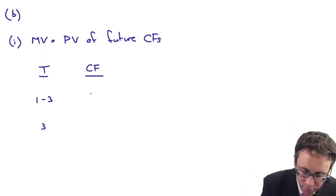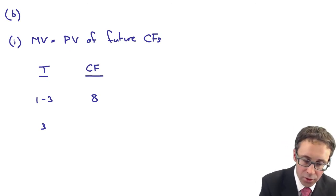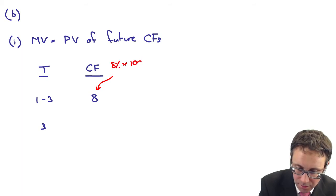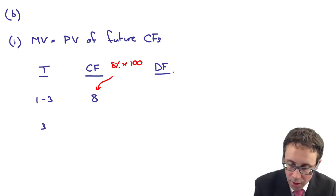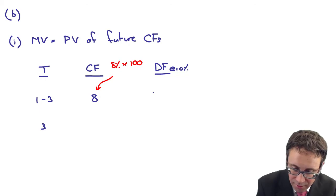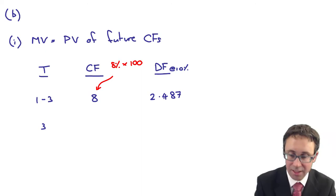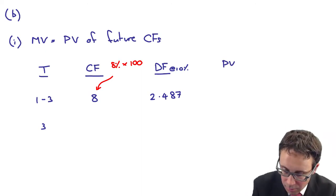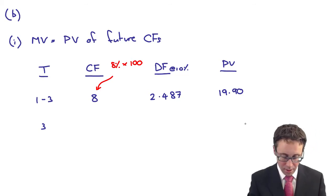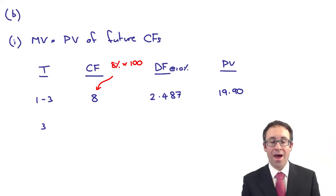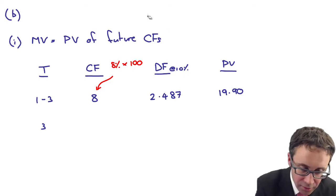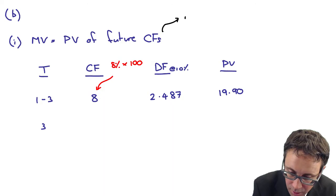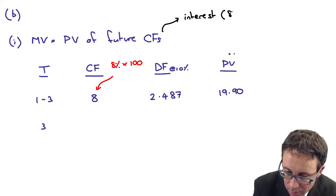So what you've got there, the cash flow from one to three is the interest at 8. So if you're curious as to where that's come from, it's 8% coupon of the par value. And then what we need to do is a little bit of discounting. The investor required a rate of 10%. So an annuity factor for three years at 10% is 2.487. You can use your tables to work that out. And your present value is at 19.90.